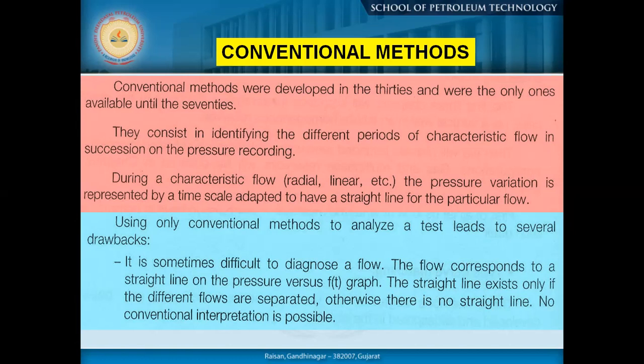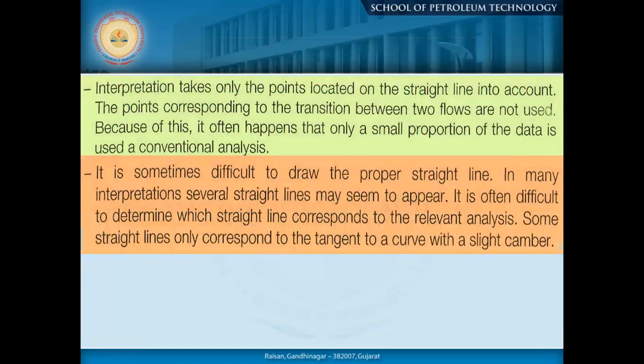Using only the conventional method leads to several drawbacks. It is sometimes difficult to diagnose a flow that corresponds to a straight line on a pressure-versus-time graph. Generally, the straight line exists only if the different flows are separated; otherwise there is no straight line and no conventional interpretation is possible. Now, we are fitting the same formulations into polynomial forms, where the power of the polynomial helps us understand the specific domain and correlate it to the physical nature around the well.